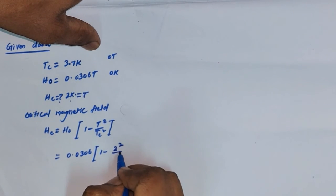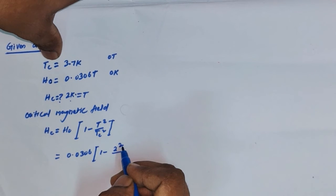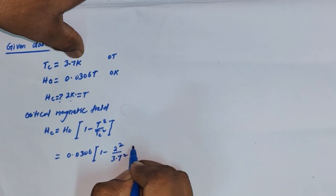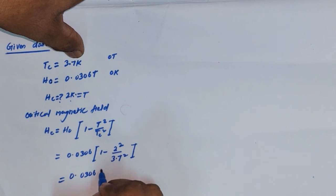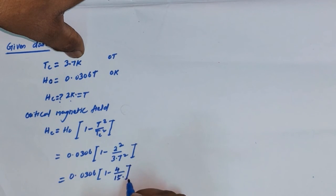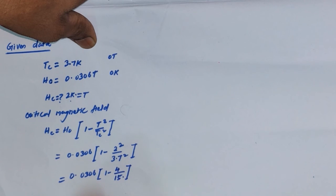So it is 2 squared, divided by the critical temperature 3.7 kelvin squared. Calculating: 2² = 4, and 3.7² is approximately 13.69, so 4/13.69 is approximately 0.292. Therefore H_c(2K) = 0.0306 × (1 − 0.292), which gives approximately 0.0216 tesla.